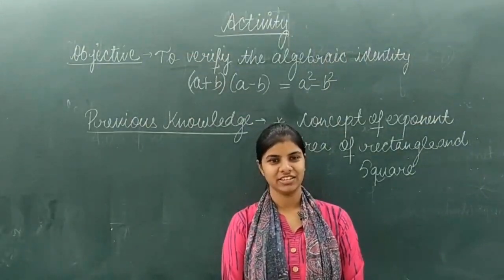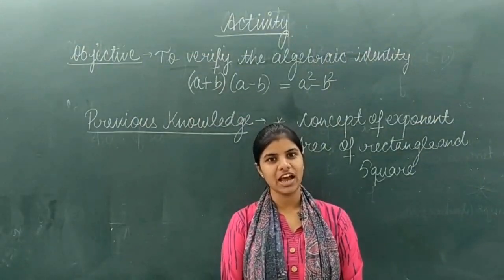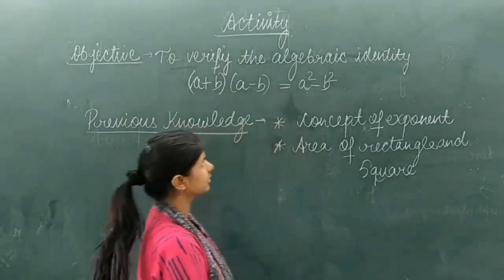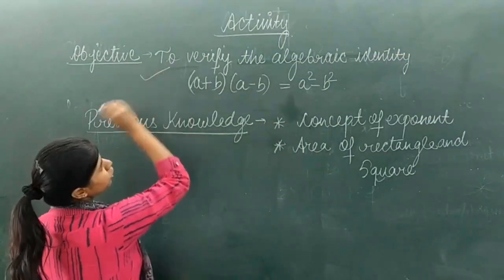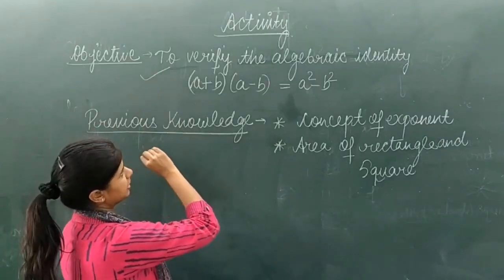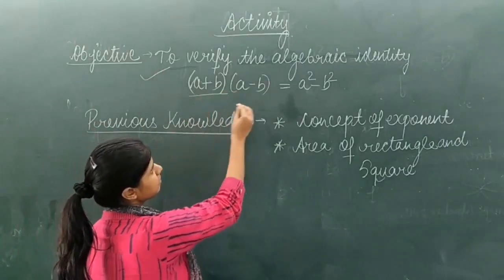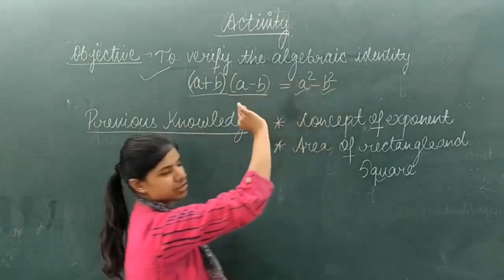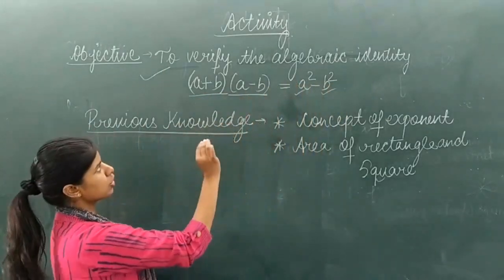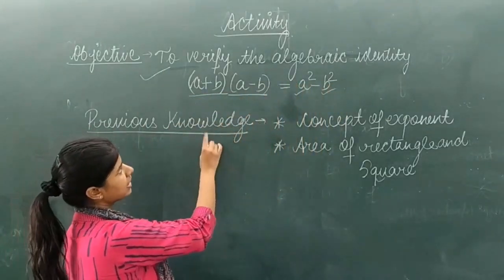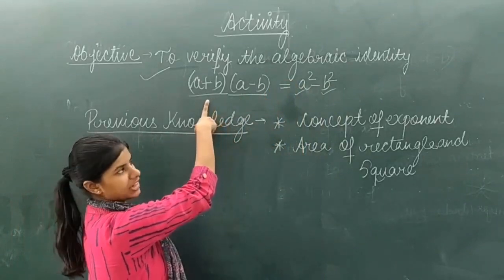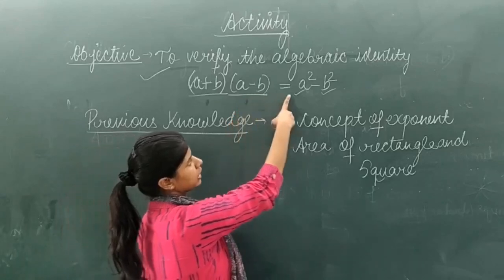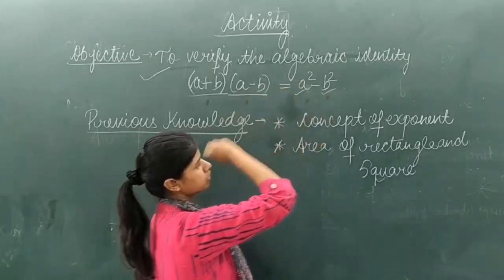Hello students! Today I am going to perform an activity to verify the algebraic identity A plus B multiplied by A minus B equal to A square minus B square. We need to verify the third identity, that is (A+B)(A-B) = A²-B².